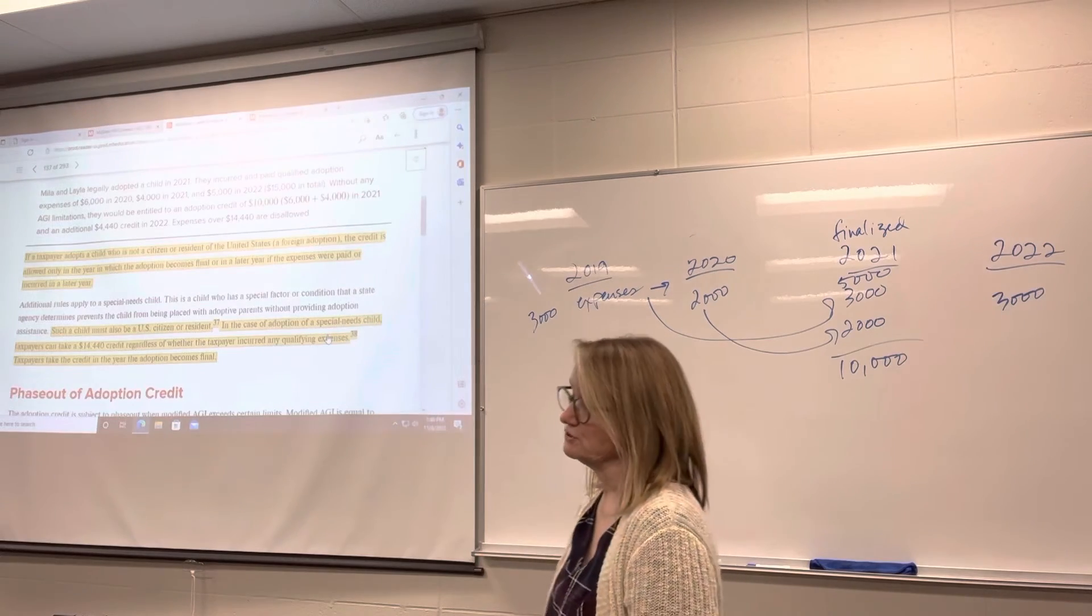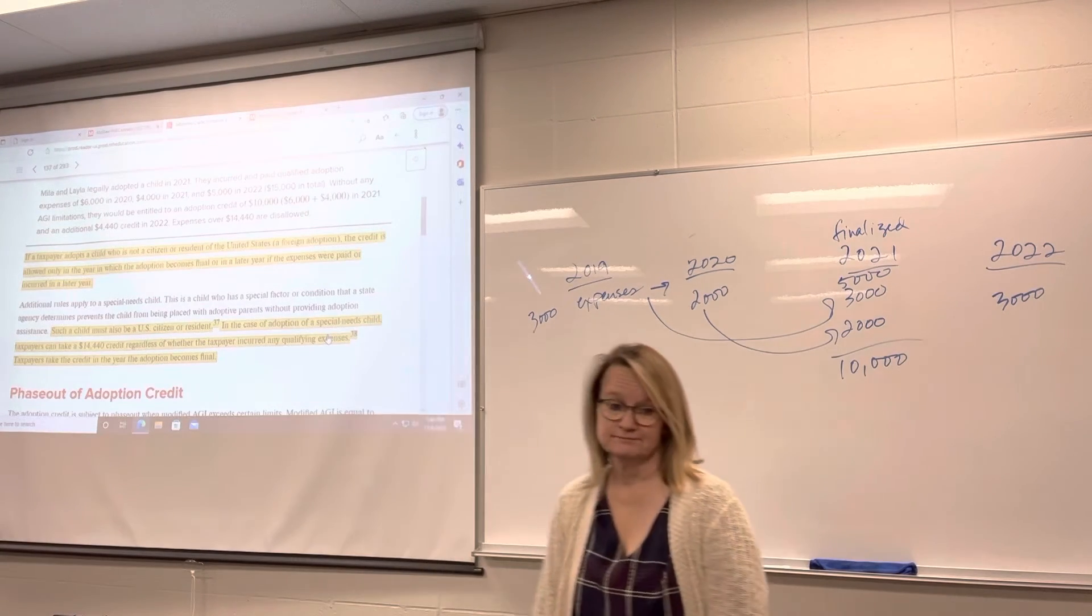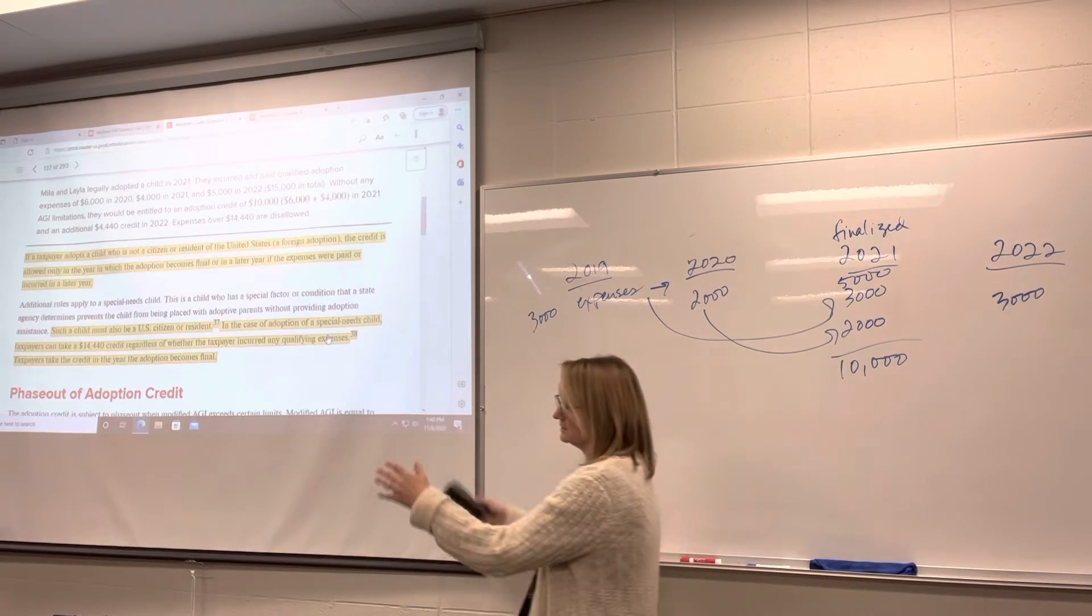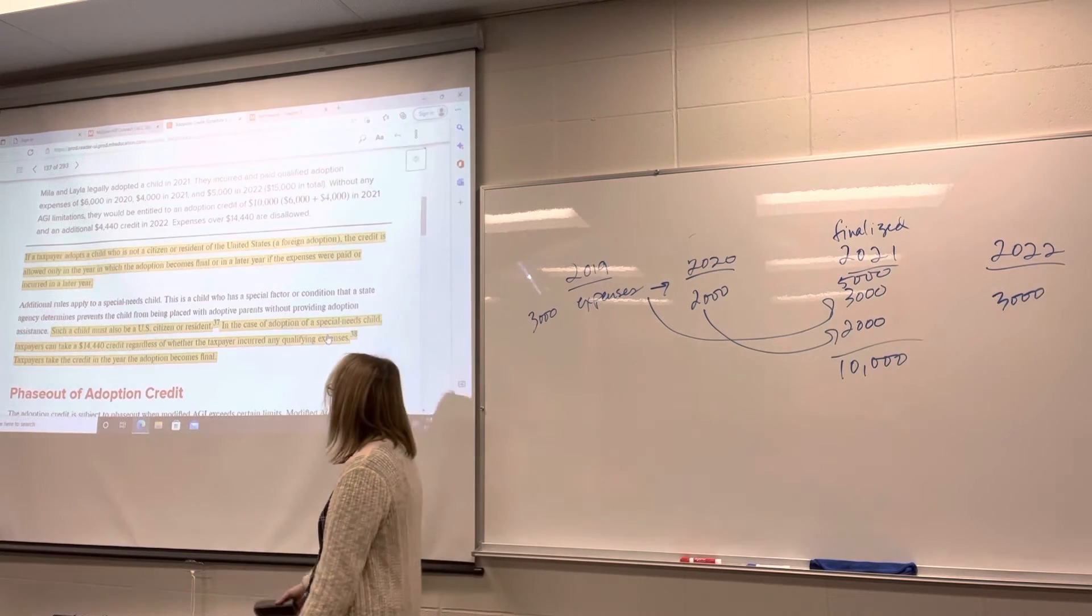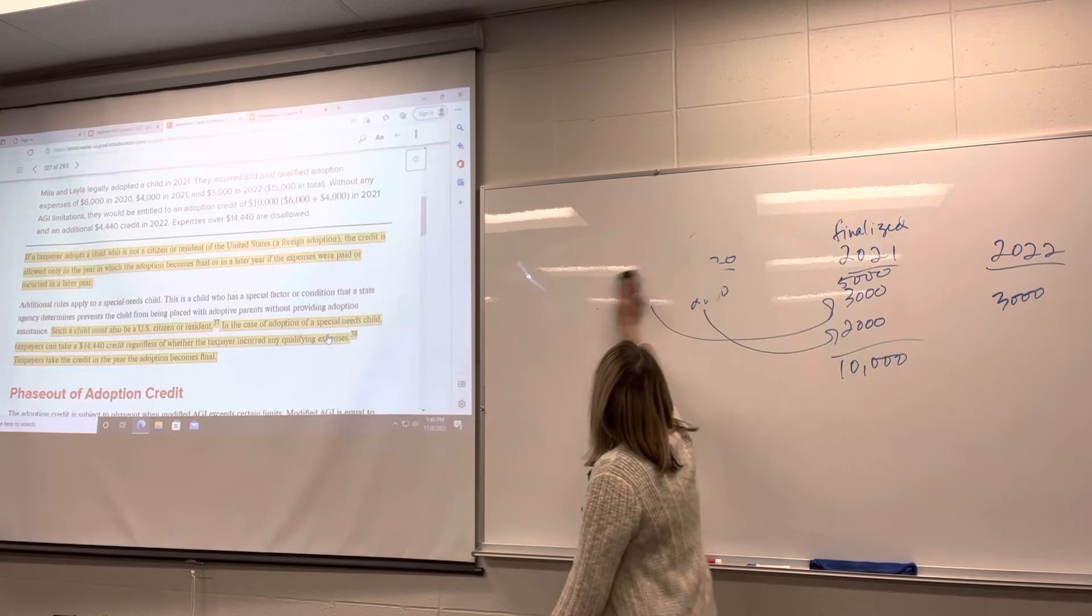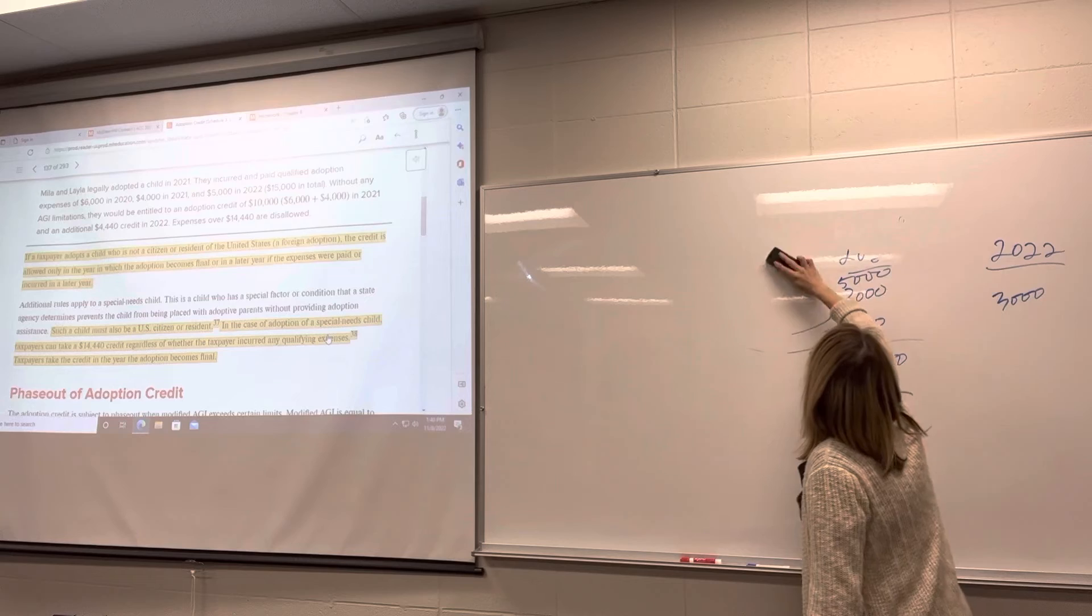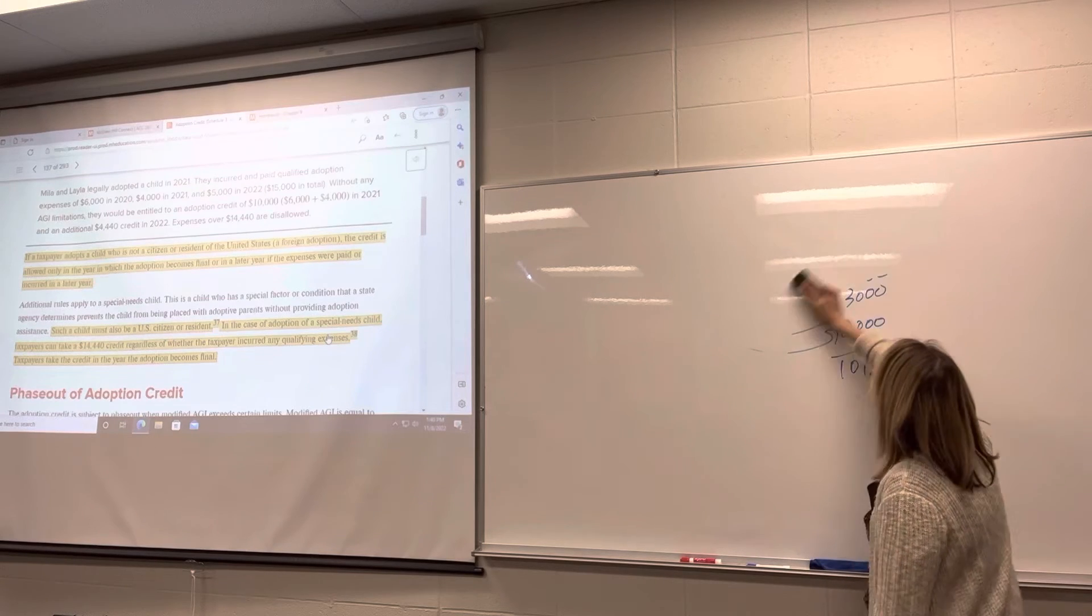They take the credit in the year that the adoption becomes final. I had a client who adopted two special needs children. And a huge credit, like $26,000. It was because the amount was lower at the time in the year. It gets carried forward. So they weren't going to be paying taxes for a while.